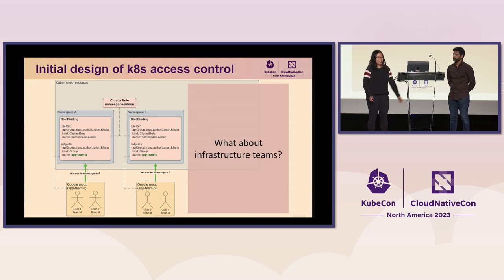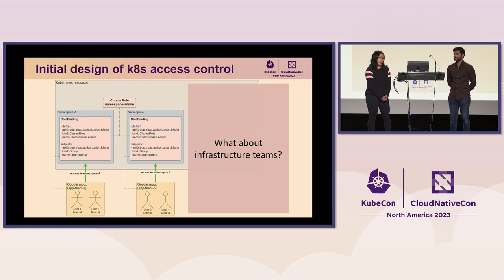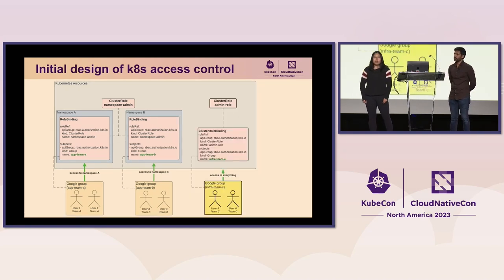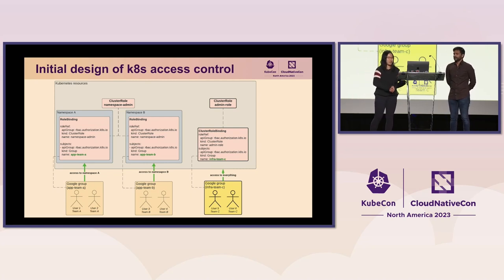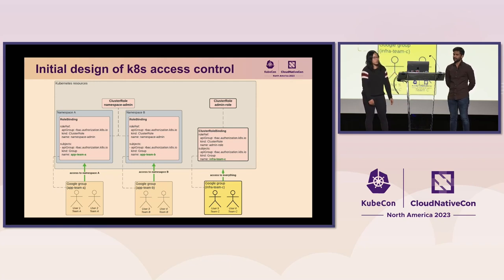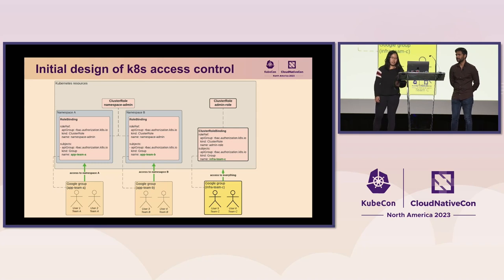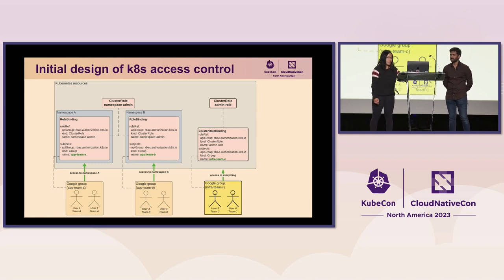That covers application teams, but you might be wondering about infrastructure teams that need access across several namespaces or cluster-wide resources. For that, we used a cluster role called admin role, which is very similar to the built-in cluster admin cluster role — giving permissions to do literally anything in the cluster via wildcard verbs and resources. The Google Group on the bottom right is the infrastructure team, and they are the ones that have access to this.